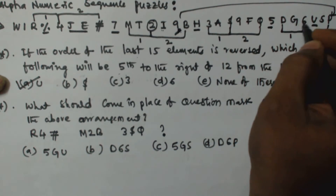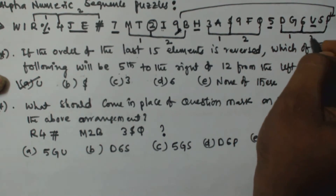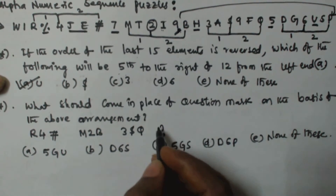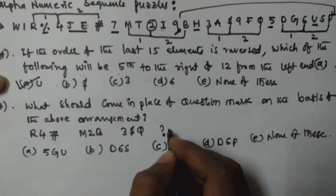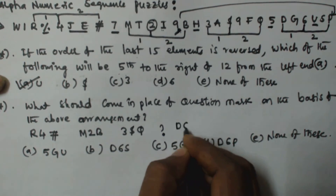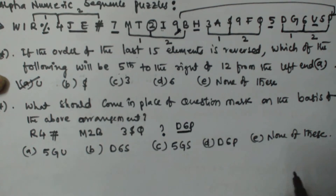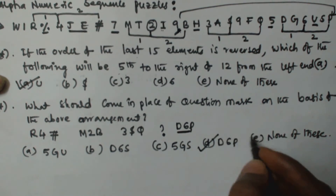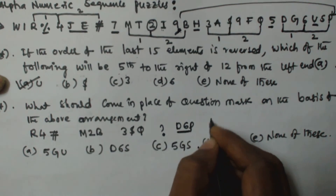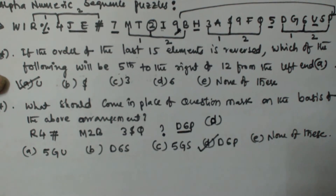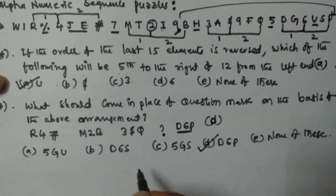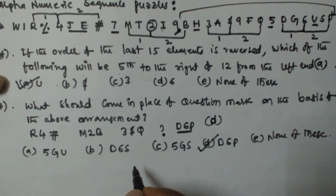Following the same pattern for the next group: we take D, skip one (6 is next), then move to 6, skip two elements (U and S), and land on P. So in between D and 6 there is one element, and between 6 and P there are two elements. Therefore the answer is D6P, which is option D. I hope you got this — thank you very much for watching, please subscribe, and leave a comment if you have any doubt.